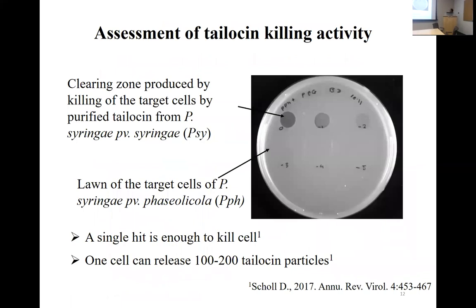Here I'm showing tailocin activity assessment done in the lab. We have a lawn of a target bacterium — in this case Pseudomonas syringae pathovar phaseolicola, a bean pathogen — and we spot different dilutions of tailocin particles prepared from Pseudomonas syringae pathovar syringae. We can see a clear clearing zone, suggesting that growth of the target bacterium is inhibited and the bacteria are killed. Tailocins are very potent killers — a single hit is enough to kill a bacterial cell.